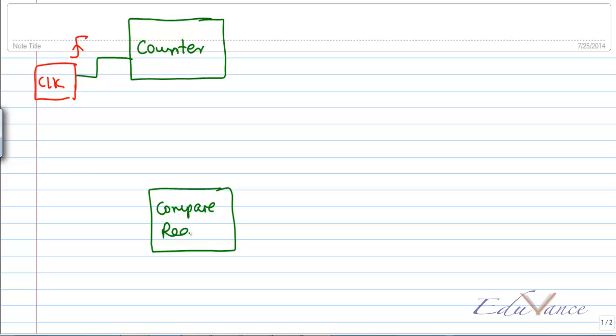Now if I have a digital counter which counts on every pulse of the clock edge, and I have another register, let's call it the compare register, and it is loaded with a value.